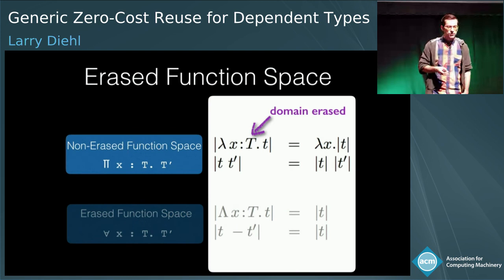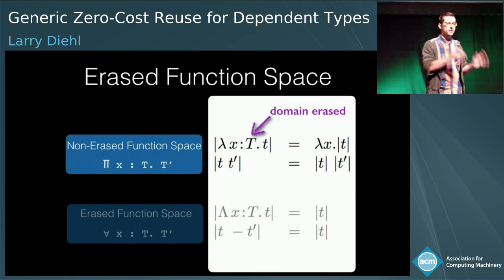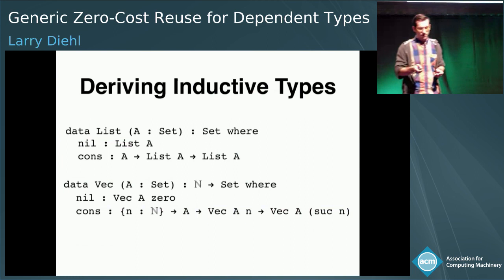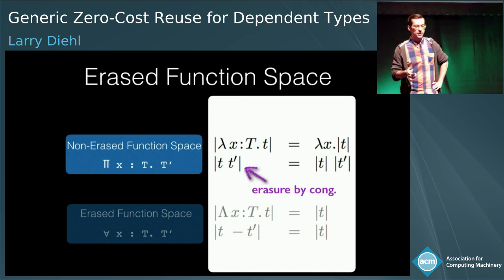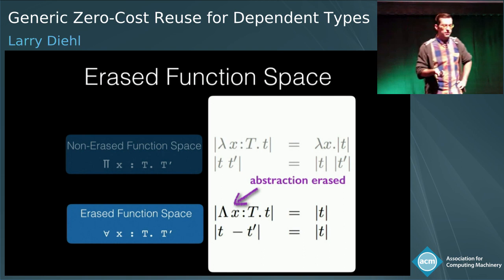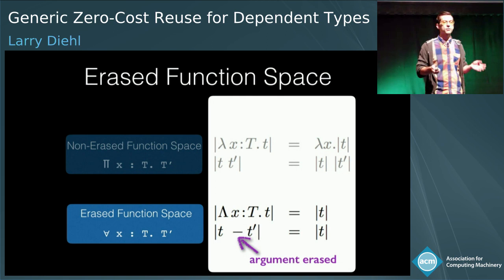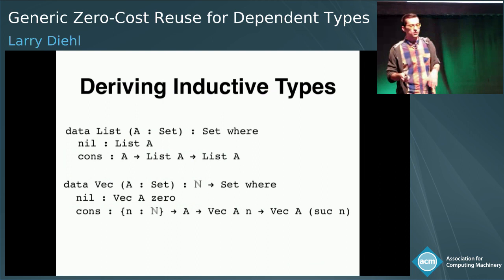The informal intuition is that in type signatures we can rely on erased arguments to constrain our data type—like in the type of vector append—but at runtime, vector append cannot depend on the natural numbers. For the elimination rule of the erased function space, it's the same as the non-erased space but with a special syntax. Non-erased abstractions are erased by removing the domain annotation and erasing the body; erased abstractions are erased by completely dropping the abstraction and erasing to the body; and for erased applications, we completely drop the argument and erase the function.